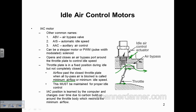Probably need to remember that for an ASE test too. Minimum idle speed would be the idle speed of that vehicle with the air bypass passage blocked off — no air flow around the bypass, valve seated all the way. The only air flow entering the engine would be past the closed throttle plate. That would be your minimum idle speed, and it's generally around 400 to 500 RPM.